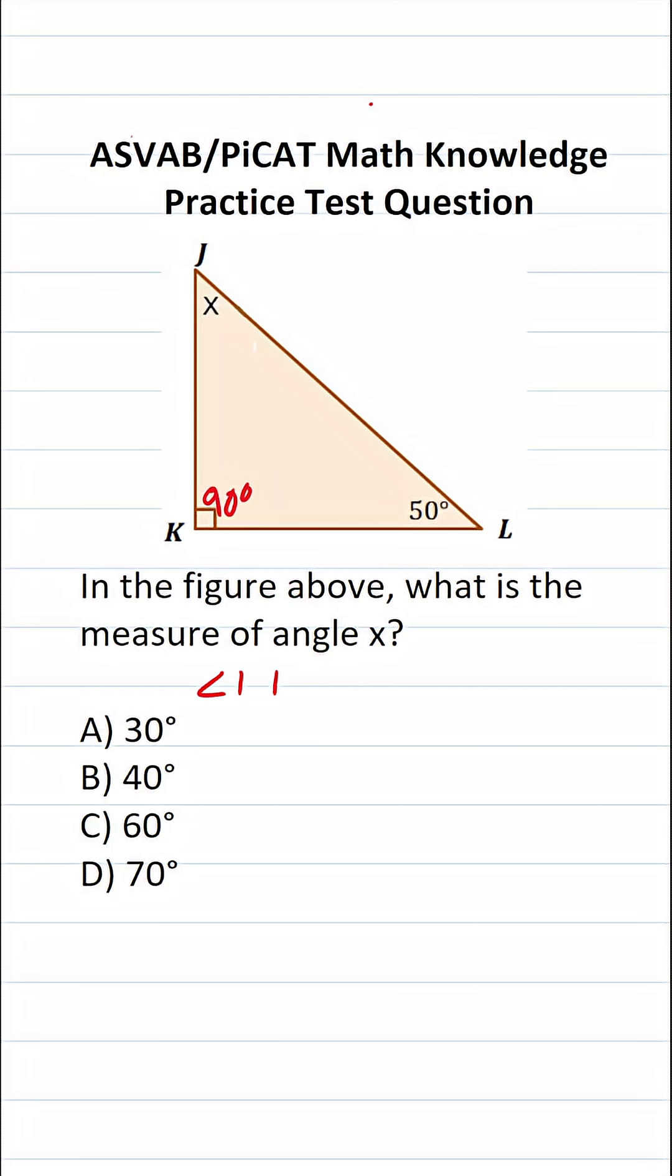In other words, the measure of angle 1 plus the measure of angle 2 plus the measure of angle 3 in a triangle will always equal 180 degrees. In fact, that's called the triangle sum theorem.